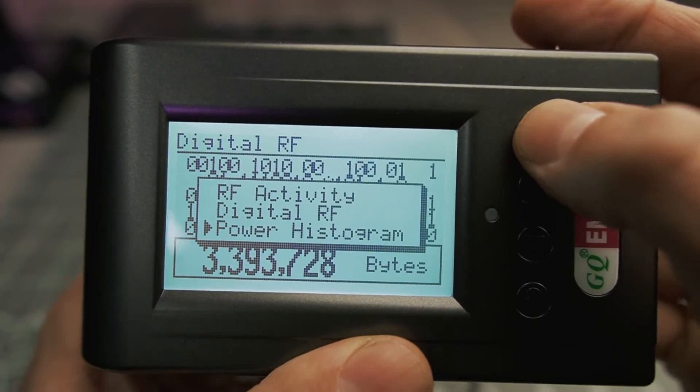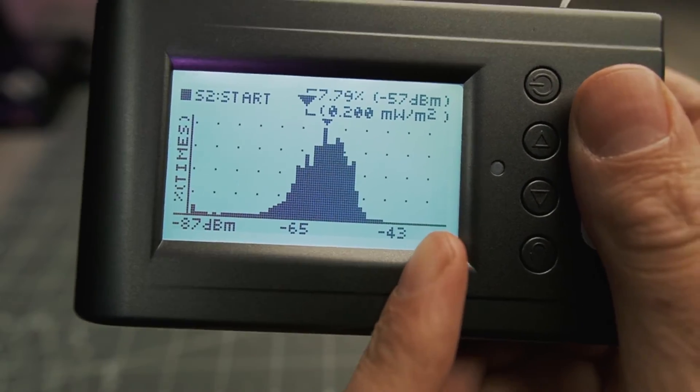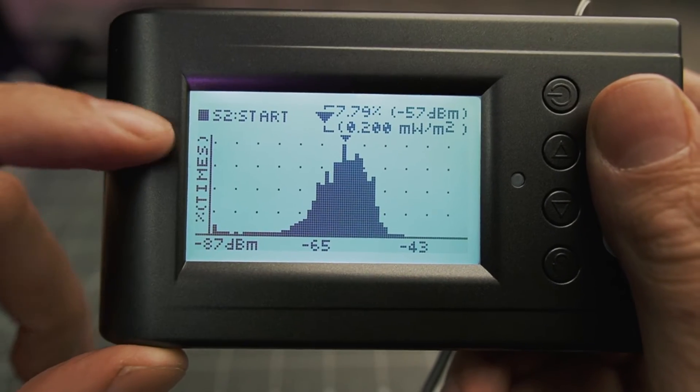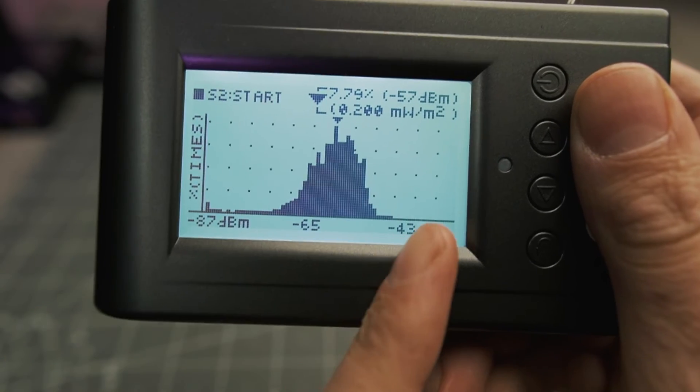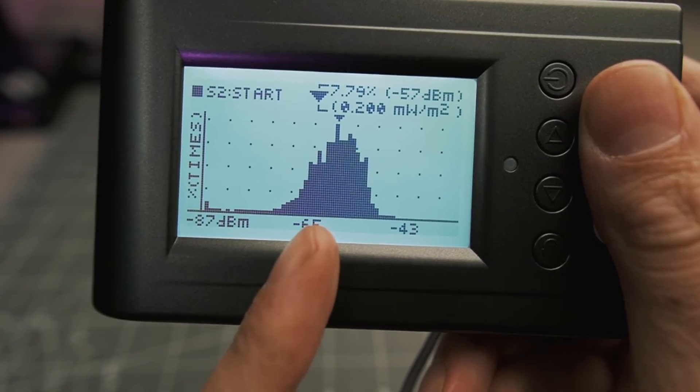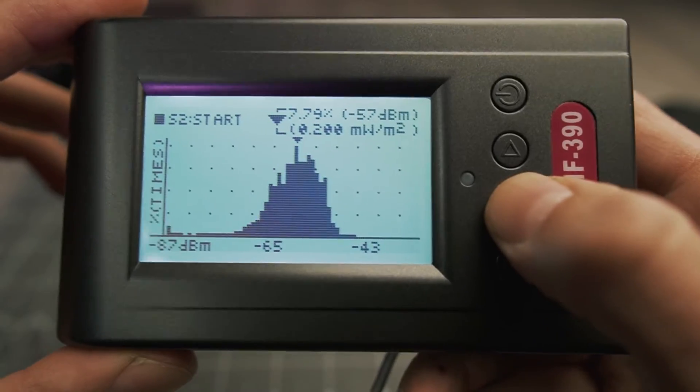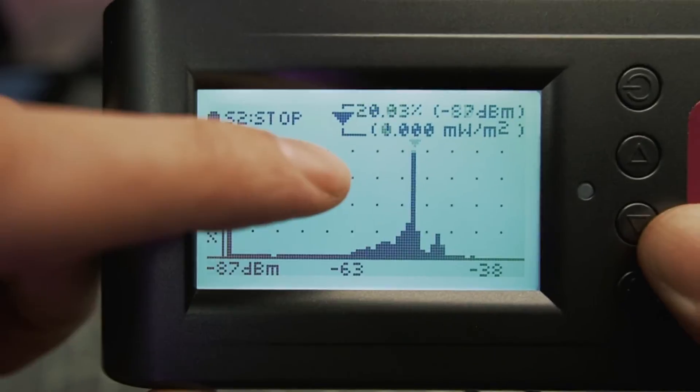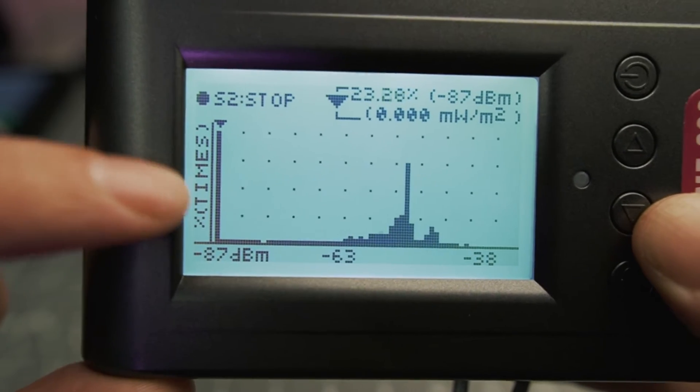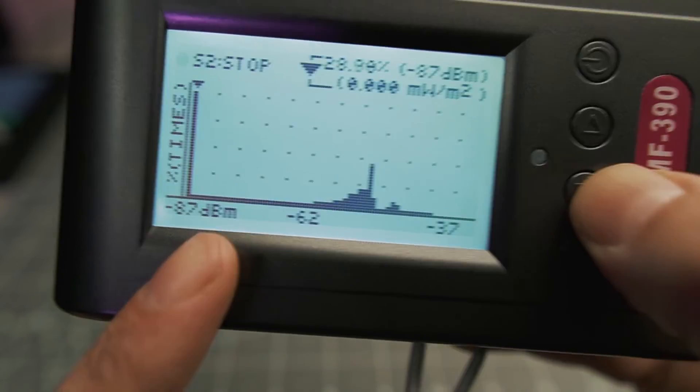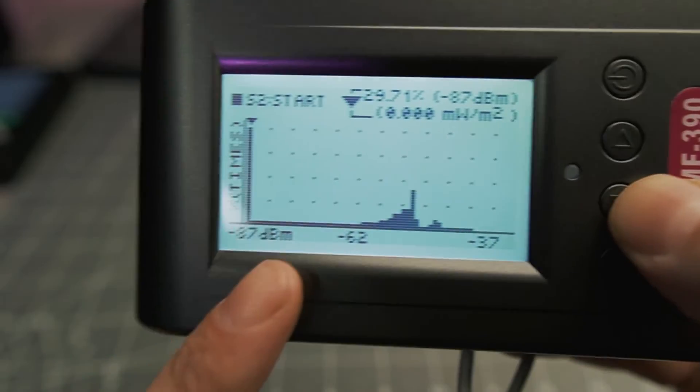And finally, there's the power histogram. So this chart shows the signal strength measured in decibels and the height represents the number of times a signal at that strength was detected. So it's actually measured over time. So you need to hit this button right here to start the measurement, the height of the bar indicates how many times a signal was detected at that strength. And then you just hit the button again to stop it.